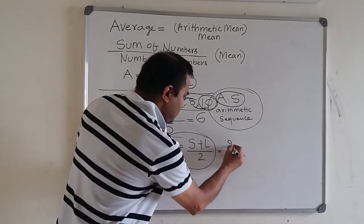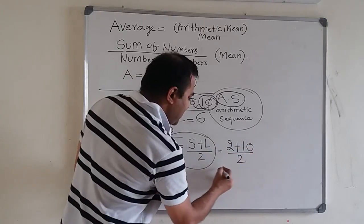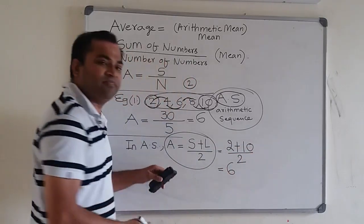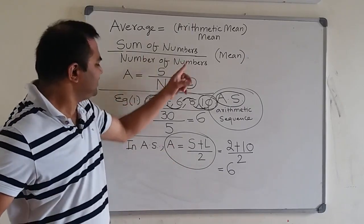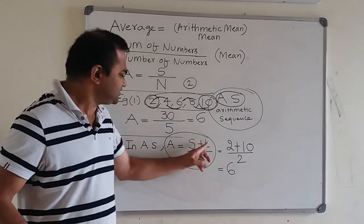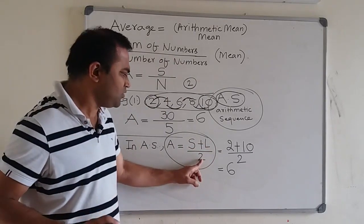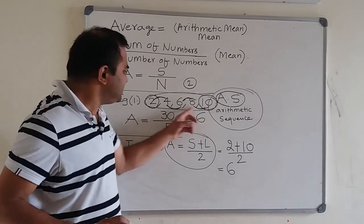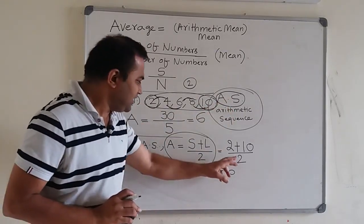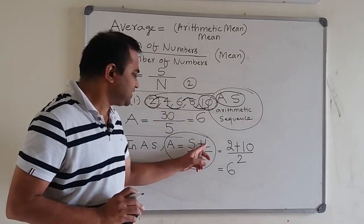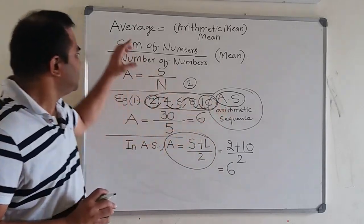The smallest number is 2, the largest is 10, and their average is again 6. The denominator is 2 because we are averaging two numbers — the smallest and the largest. So the average of these numbers in arithmetic sequence is 6, the same as when using the normal formula.